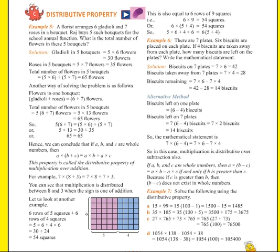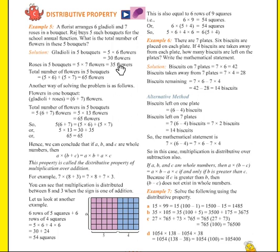Next, roses in five buckets equals five into seven — because there are five buckets and in each bucket we have seven flowers. So we multiply five into seven flowers, that is equals to thirty-five flowers.